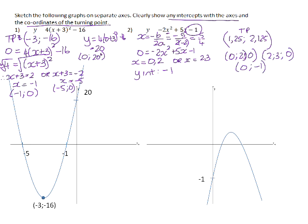So if we just plot those points, there's the y-intercept at -1, the x-intercepts at 0.2 and 2.3, and the turning point is at (1.25, 2.125).